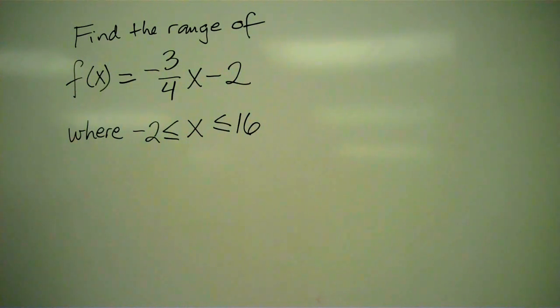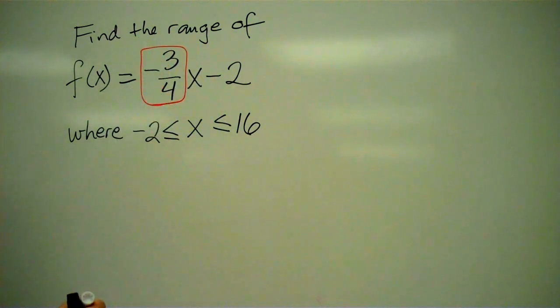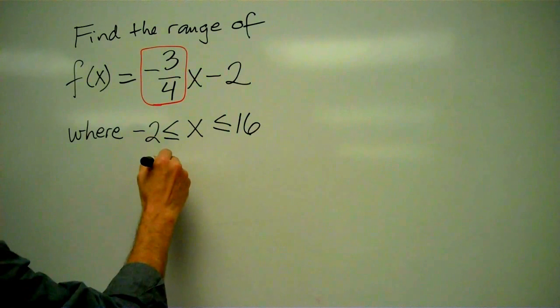This is just going to be a line, a line with a slope of negative 3 fourths, and a line with a negative slope is going to look something like this.